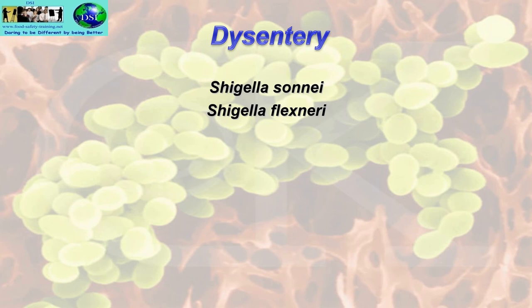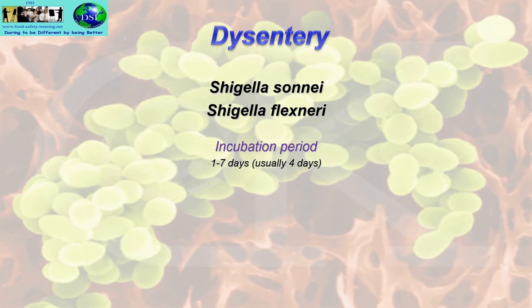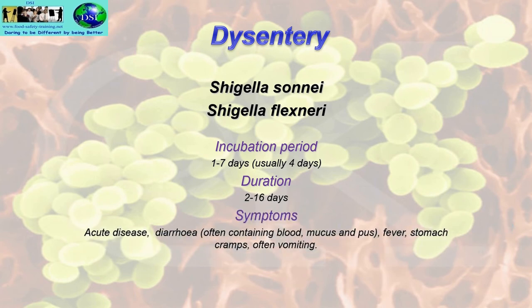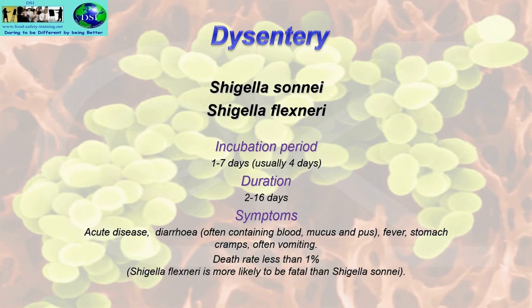Bacillary dysentery is normally caused by Shigella sonnei and Shigella flexneri. The incubation period is 1–7 days, usually 4 days. Duration of illness is 2–16 days. Symptoms include acute diarrhoea often containing blood, mucus and pus, fever, stomach cramps, and often vomiting. The death rate is less than 1%. Shigella flexneri is more likely to be fatal than Shigella sonnei.